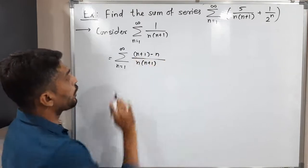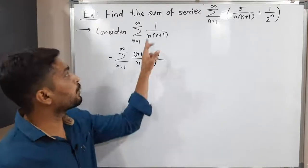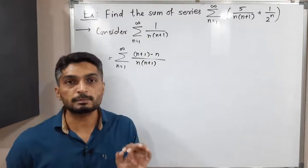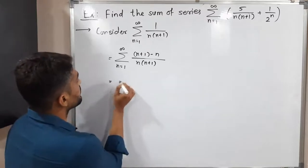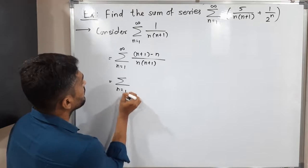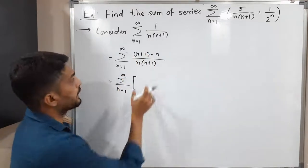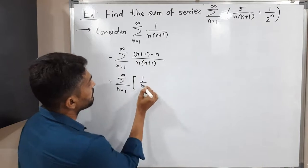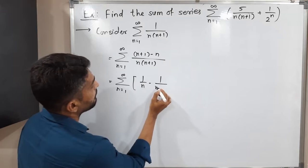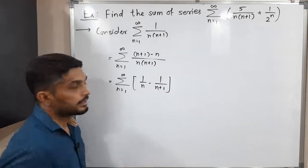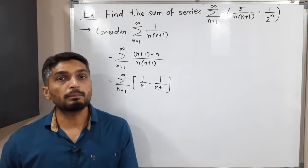If you solve the numerator, n and minus n will get cancelled and you will have 1. Simply I expressed 1 in this way. After that we divide separately, so this equals summation n running from 1 to infinity. The (n+1) terms cancel giving 1/n, and the n terms cancel giving 1/(n+1). So the same series can be expressed as summation of [1/n minus 1/(n+1)].